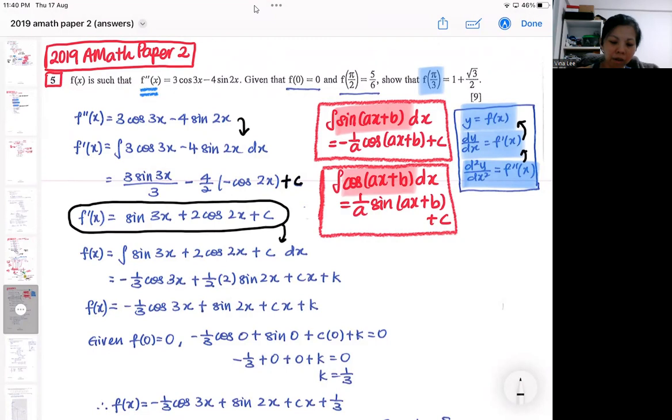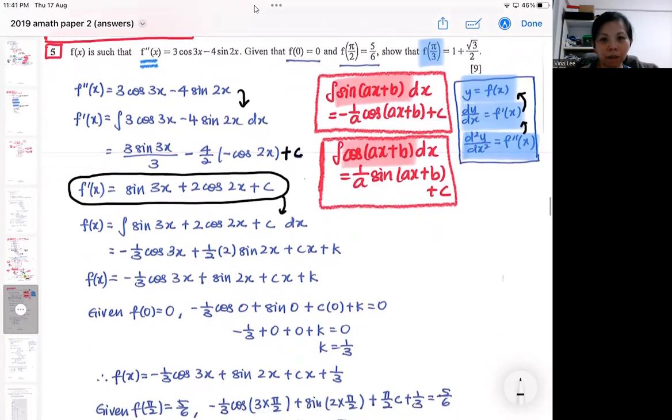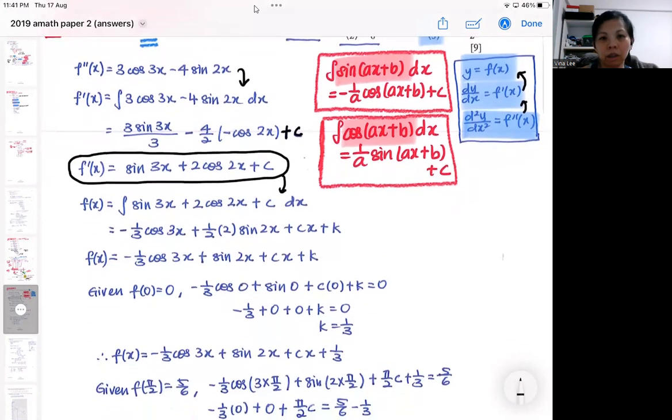So when you integrate one more time, you are using the same set of formulas, sin(ax+b) and cos(ax+b), which I will not show, but you have an additional constant to integrate. So when you integrate a constant, you get a cx and this time around, of course, you get another constant. So the other constant that I'm using will be a k.